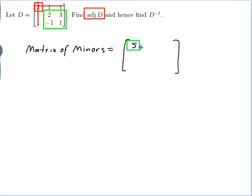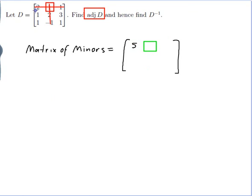Then I move on to the next entry of D. I cross out the row and column that I am in and I find the determinant of the resulting matrix. So 1 times 1 is 1, minus 1 times 3, gives me negative 2.